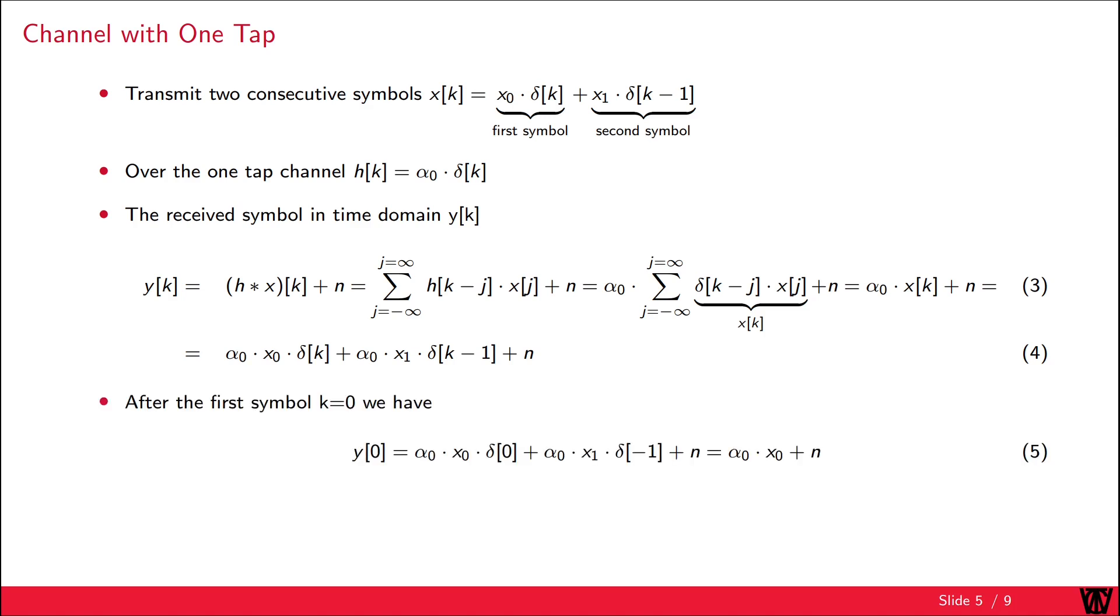After the first symbol, that means K equals 0, we get Y from 0 equals alpha 0 times X0 plus noise. After the second symbol, we have Y from 1 equals alpha 0 times X1 plus N. This means that the transmission of a symbol is only dependent on the transmission symbol in the same time slot. Therefore, we have no symbol interference.